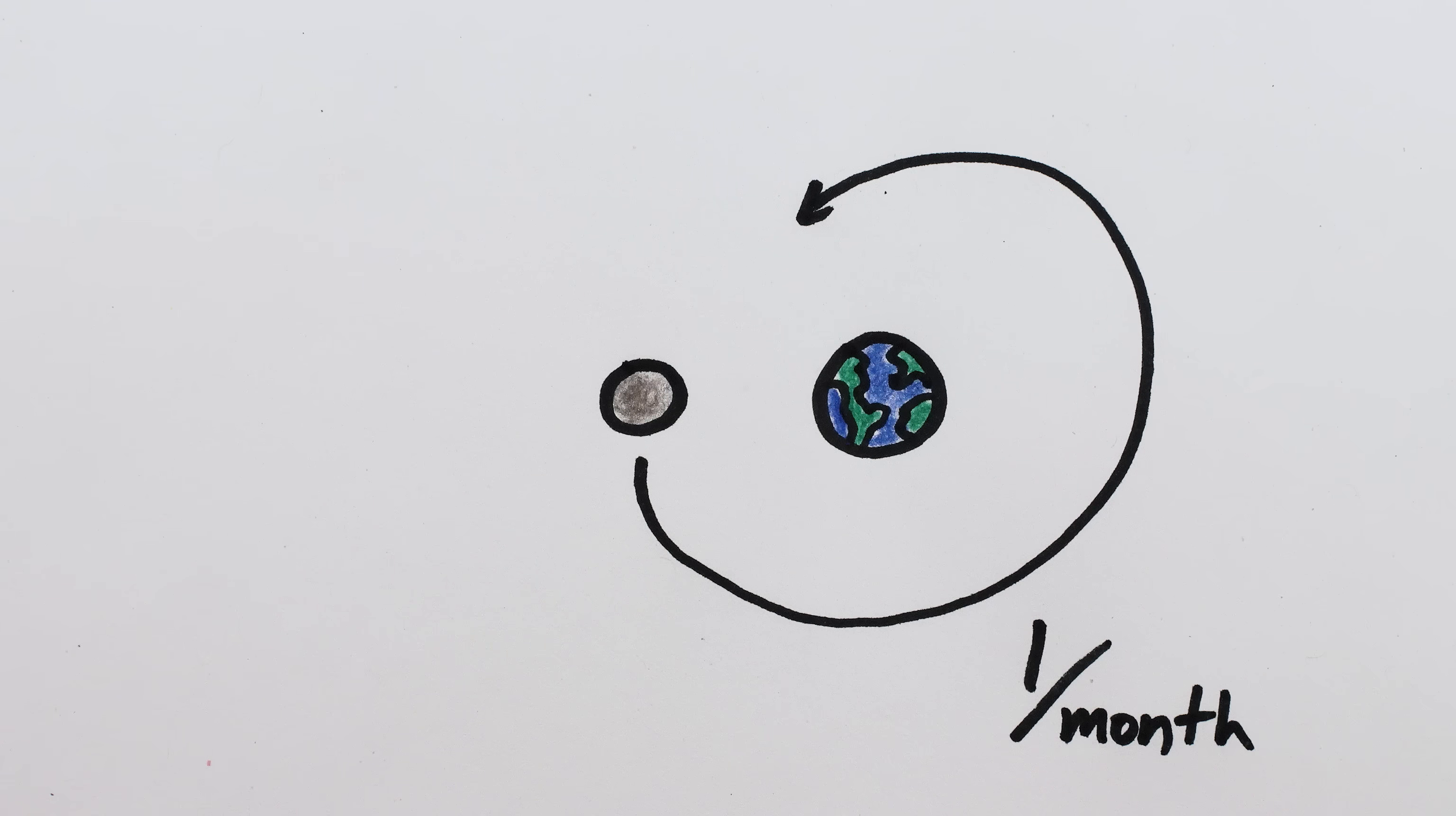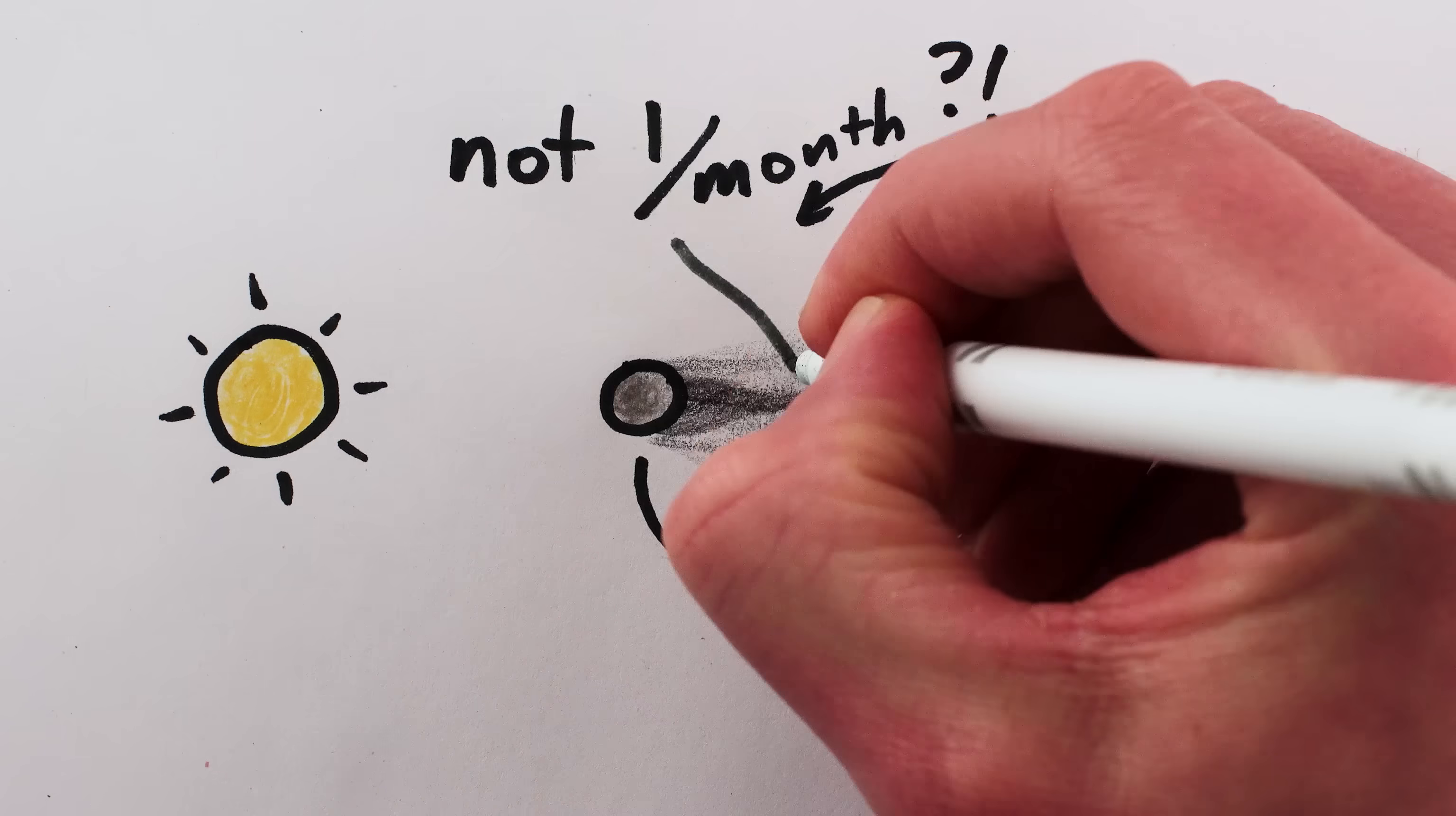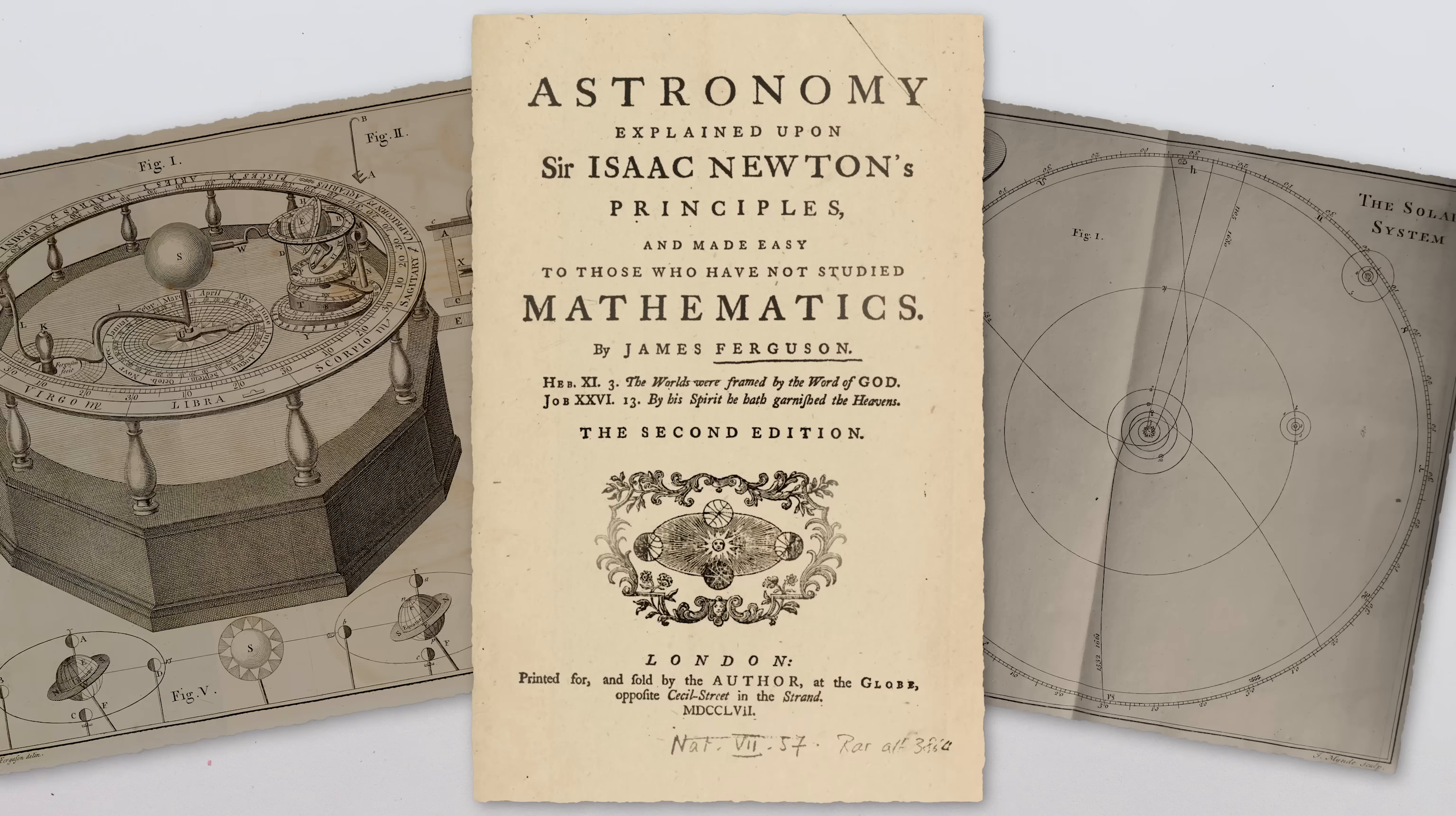The Moon orbits the Earth once per month, which means the Moon is on the Sun side of the Earth every month. So, why aren't there eclipses every month is a question answered eloquently in a 1757 astronomy book by James Ferguson.